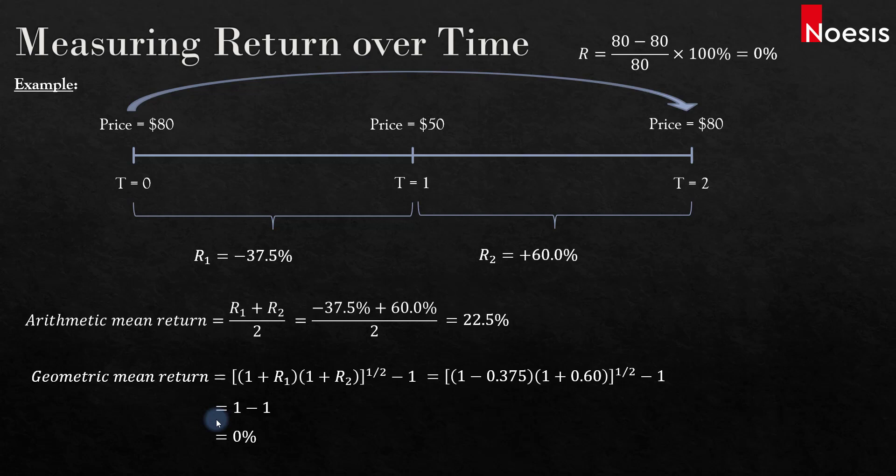If focused on the profitability of an investment on a multi-period horizon, the geometric mean is of key interest to investors. The arithmetic mean return, which focuses on average single-period performance, is also of interest to investors. Both arithmetic and geometric means have a role to play in investment management, and both are often reported for return series.